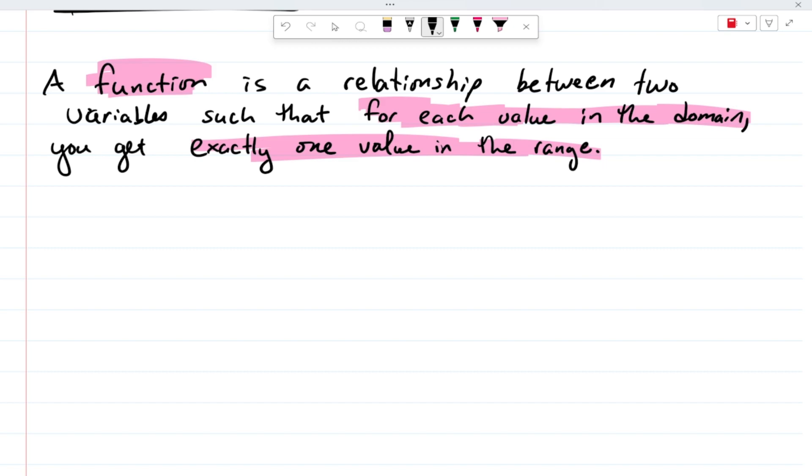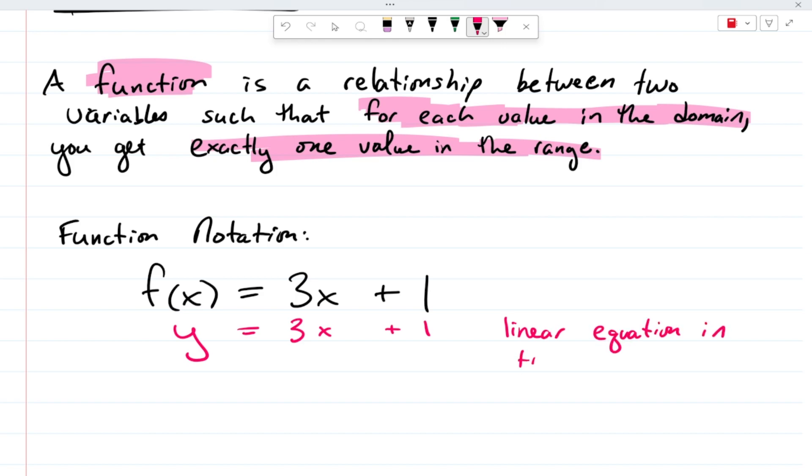So, the first function notation. All right. So, you have seen functions in the past. For example, you may have a function that looks like this. Now, this is called functional notation. Now, this should look kind of familiar to you in the sense that this kind of looks like y equals 3x plus 1. It kind of looks like a linear equation in two variables.